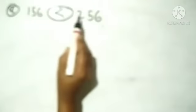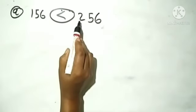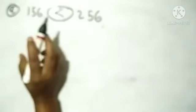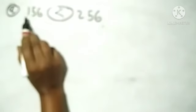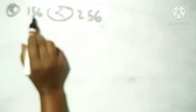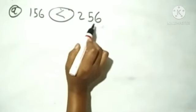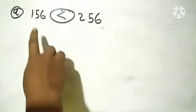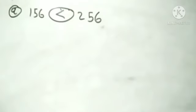One यहाँ पर है, two यहाँ पर है। Two बड़ा होता है बच्चों — two is greater than one. So इसे हम कैसे पढ़ेंगे? 156 is less than 256. यानी 156 छोटा है 256 से।